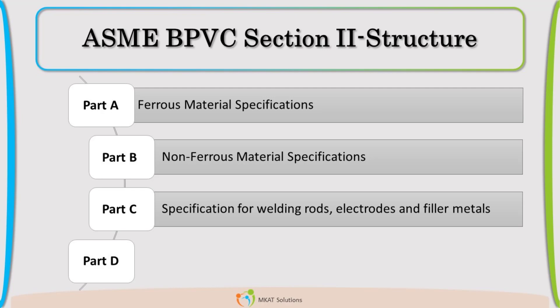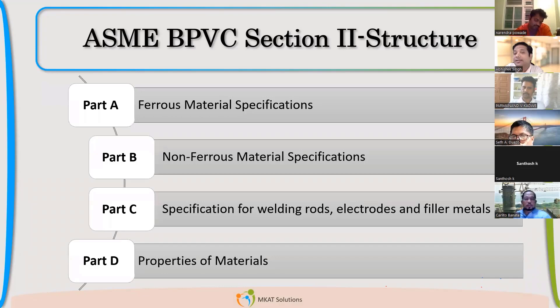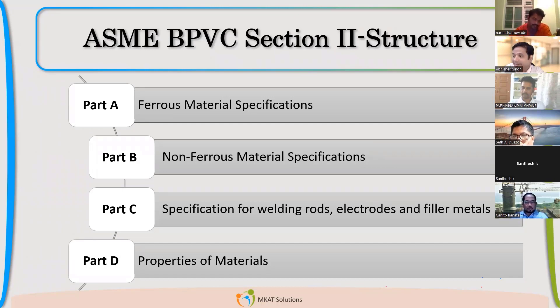which we use for welding. For welding electrodes also, we need specifications, so for that purpose Part C is there. Part D is very useful as a static equipment design engineer because Part D covers properties, allowable stresses, and modulus of elasticity — physical and mechanical properties.